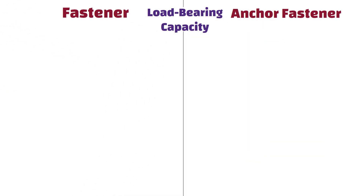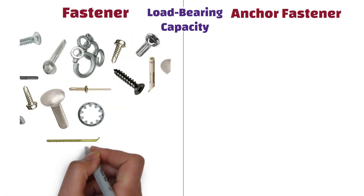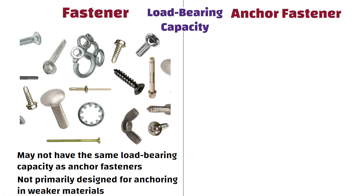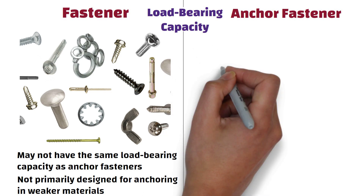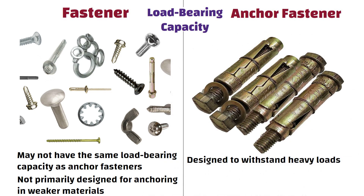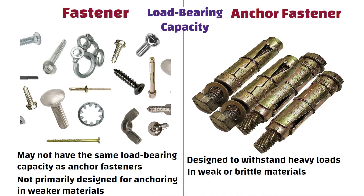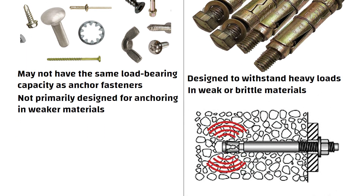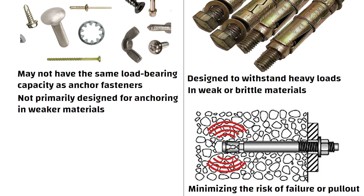Load bearing capacity: Regular fasteners may not have the same load bearing capacity as anchor fasteners, as they are not primarily designed for anchoring in weaker materials. Whereas anchor fasteners are specifically designed to withstand heavy loads and provide secure attachment in weak or brittle materials. They are engineered to distribute the load across a larger area, minimizing the risk of failure or pullout.